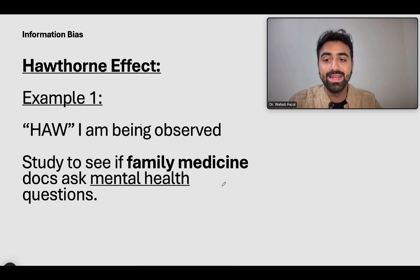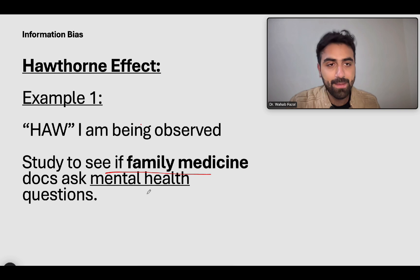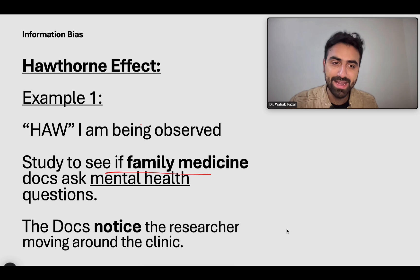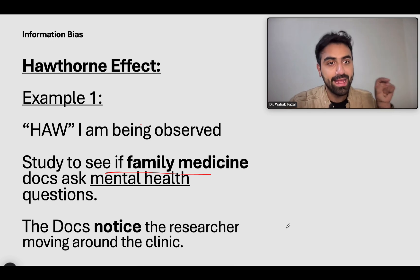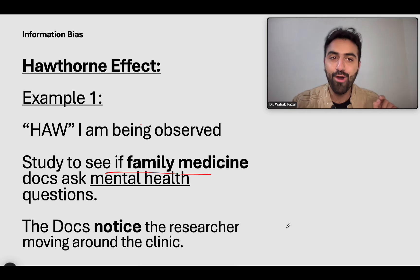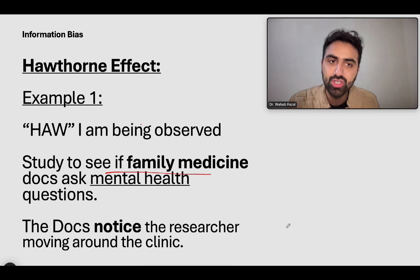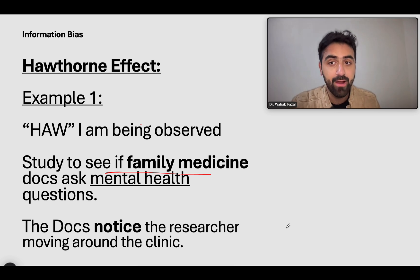Example: we want to study whether family medicine doctors are asking mental health questions or not. The doctors notice that a researcher is moving around the clinic checking whether they're screening patients for mental health problems. What happens? Obviously the doctors will change their behavior — they may be worried about their jobs or simply about being observed to see if they're doing their job well. That is Hawthorne effect: when somebody knows they're being observed, they change their behavior.